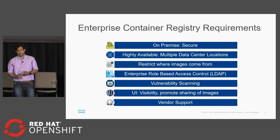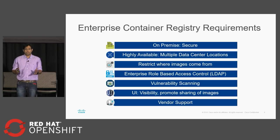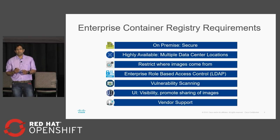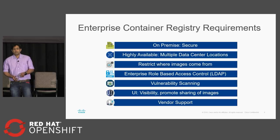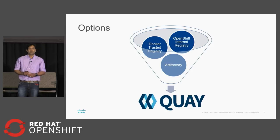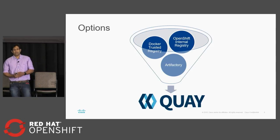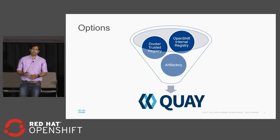It should also have good integration with LDAP. Cisco is very big with security, so whenever an image is pushed to the Enterprise Container Registry, it should be automatically scanned for vulnerabilities and report back any critical vulnerabilities. And it should have good UI visibility, security, and good vendor support. Keeping those requirements in mind, we evaluated different products: Docker Trusted Registry, OpenShift Internal Registry, Artifactory, and Quay.